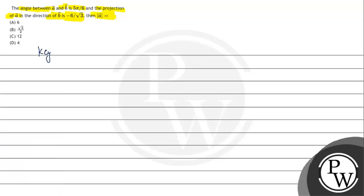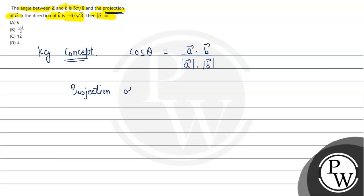Key concept kya use karenghe? First of all, angle between A and B vector: cos theta equals A vector dot B vector upon its magnitude, into magnitude of B vector. For projection of A vector on B vector, it is equal to A vector dot B vector upon magnitude of B vector.